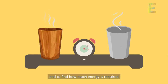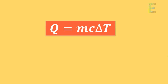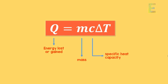And to find how much energy is required, we use this equation: Q is equal to MC delta T, where Q means energy lost or gained, M means mass, C means specific heat capacity, and delta T means change in temperature.